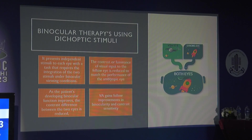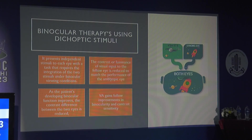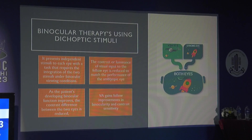The newer amblyopia treatments include active and passive modalities, mainly dichoptic and perceptual-based approaches. In dichoptics, independent stimuli are presented to each eye and integrated using red-blue glasses. The contrast in the good eye is reduced to match that of the amblyopic eye; as visual acuity improves, the games become more difficult and the good eye's contrast is progressively increased. With Binocs, stereopsis and binocular vision improve first, which then leads to improvement in visual acuity. This is why it doesn't work well in severe amblyopia, dense suppression, central suppression, or microtropia with central scotoma.